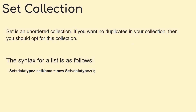A set is an unordered collection. If you want no duplicates in your collection, you should opt for set. We majorly use set when dealing with IDs or when we want to filter out particular records — to get unique IDs or unique values, and then filter on that basis. The syntax is as follows.